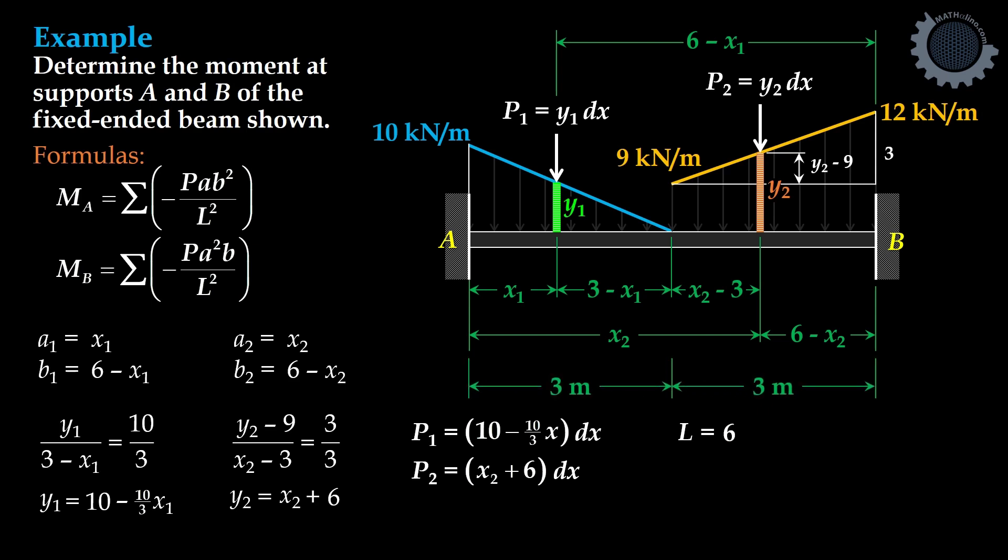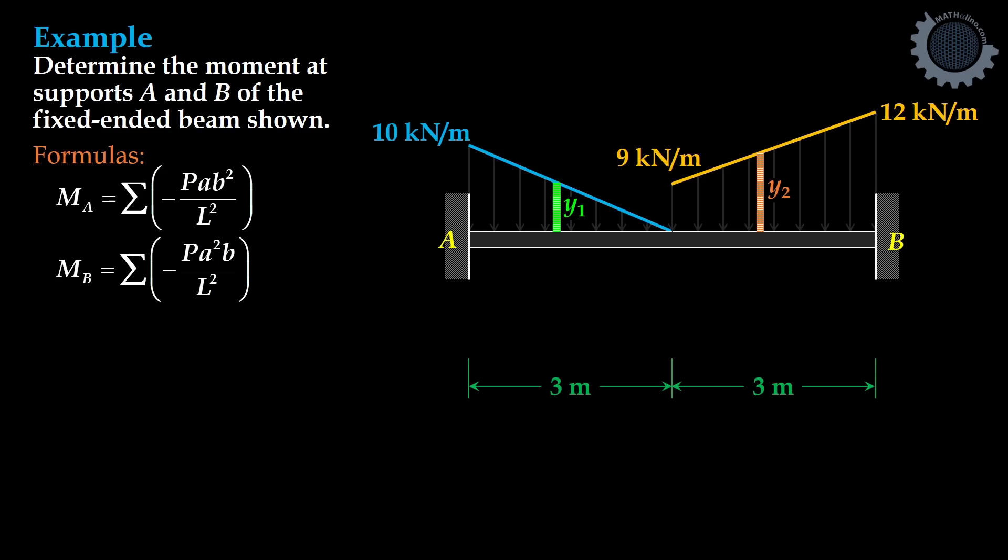There is another way to express the equation of Y1 and Y2. We can use analytic geometry. To do that, we are going to superimpose our XY plane at the left end. That is our origin. So we have this point as 0, 10. This point as 3, 0.